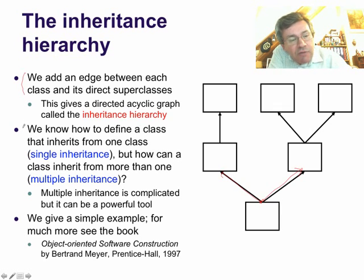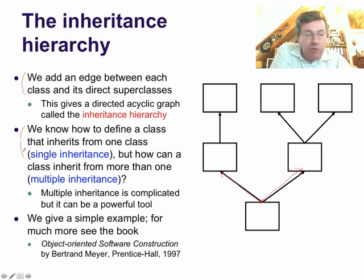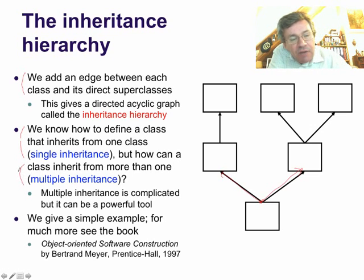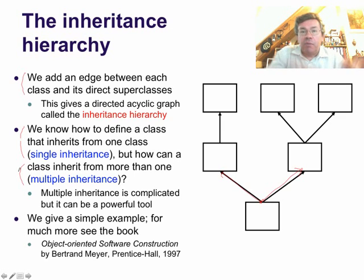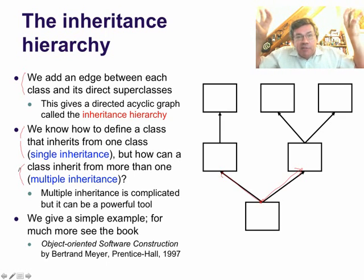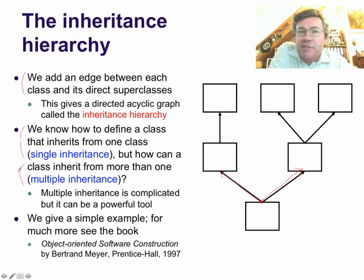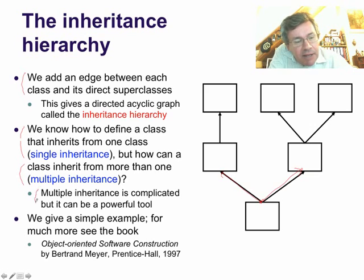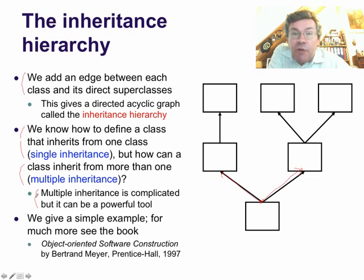Now we know how to define a class that inherits from one class — we devoted quite a bit of time to that — but how can a class inherit from more than one? That's multiple inheritance. Because each of those two superclasses has its own semantics and set of things, how can we merge those together? In fact, it seems complicated, and it is complicated, but it can be a powerful tool.